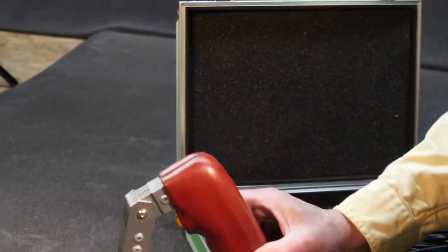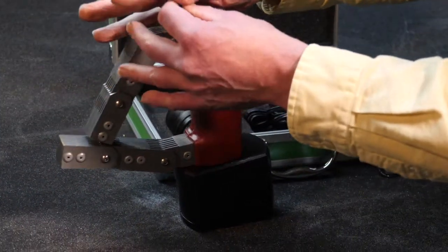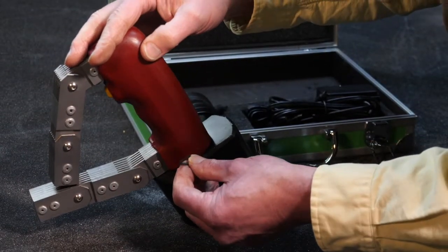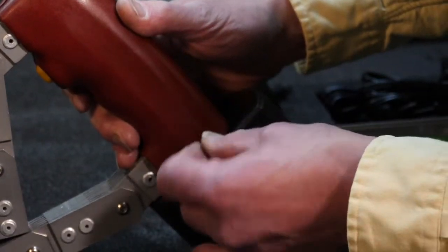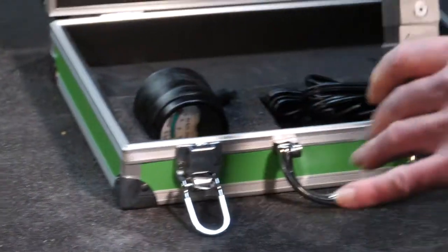After we have the battery cover back on, we return the allen key to its keeper position, slide it back in out of the way, and we're ready to test again.